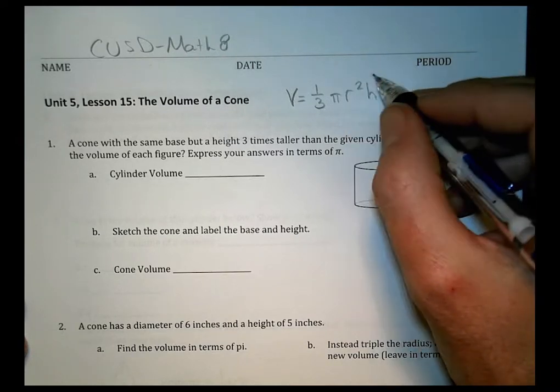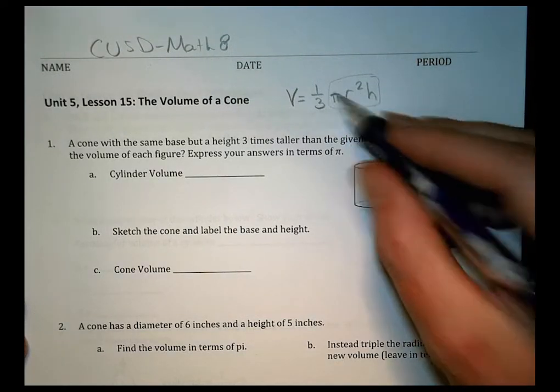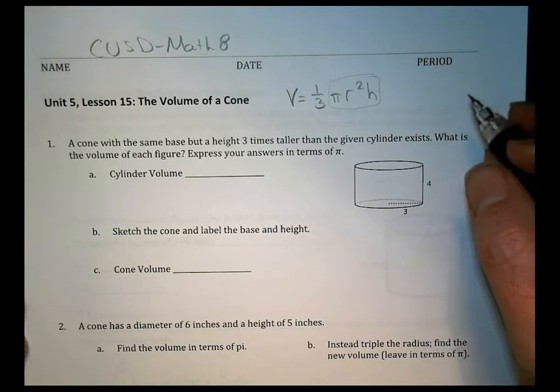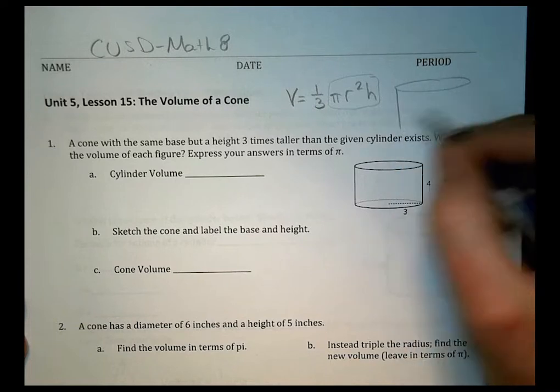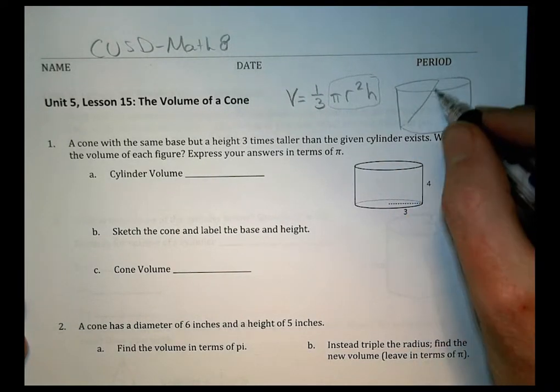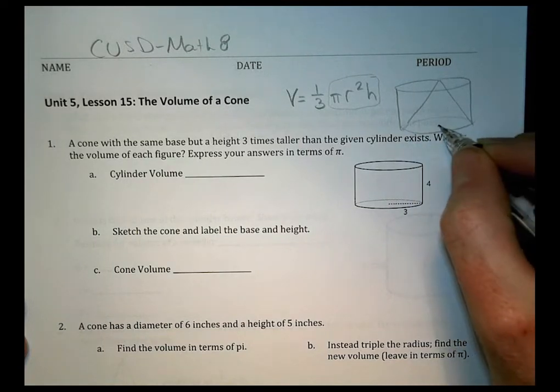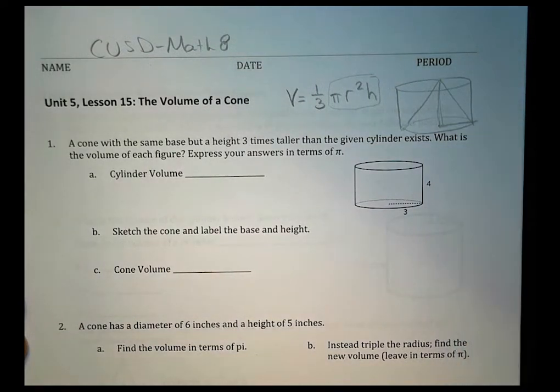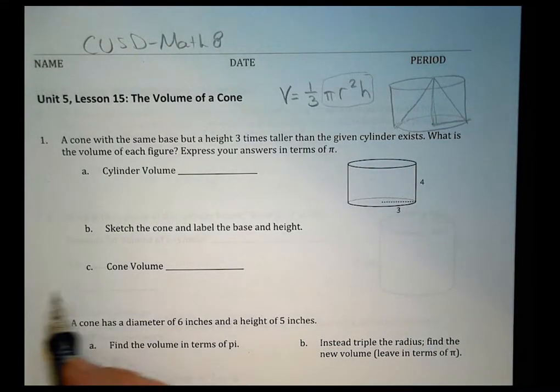Now remember the volume of a cylinder was just this part right there. So what we found out really today was that a cone is 1/3 of the volume of a cylinder. Now if you think about this here, that just means that a cone, if you think about our cylinder from our lesson today, the cone fits inside of a cylinder like so. If it has the same radius and the same height, it's going to be 1/3 of that volume. And that's what we talked about today in the lesson more than anything else.